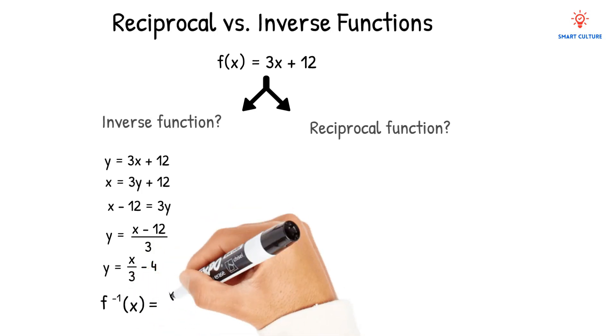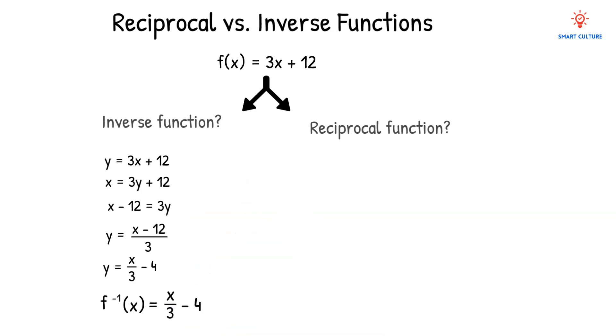Then we replace the y with the inverse function notation. So the final answer here will be f inverse of x is equal to x over 3 minus 4. This is the inverse function of 3x plus 12.